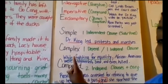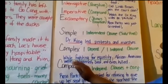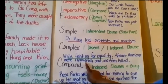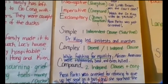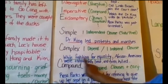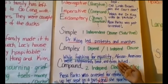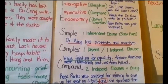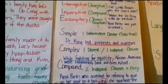A complex sentence has two parts: one part is dependent and one part is independent. One part can stand alone, but one part cannot. For example: 'While fighting for equality, African Americans were threatened, beaten, and even killed.' The dependent clause — 'while fighting for equality' — cannot stand alone, so I put a comma after it. 'African Americans were threatened, beaten, and even killed' is the independent clause; it can stand alone as a complete sentence.